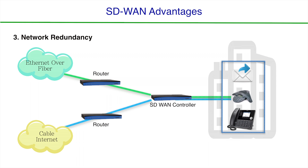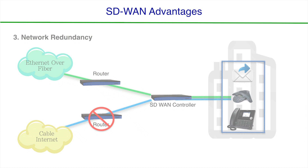If one provider's connection goes down, all activities continue to operate on the remaining provider. In most cases, the end user experiences no dropped packets or delays, which means, in essence, there's no downtime. This is a big paradigm shift in internet redundancy.